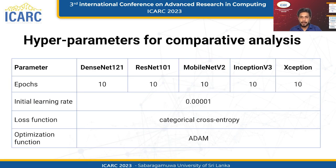In our study, we used several hyperparameters to perform a comparative analysis of different convolutional neural network architectures for visual feature extraction. For each of the CNN architectures we tested, we used a fixed number of epochs set to 10. We also used an initial learning rate of 1×10⁻⁵ for all models. We used categorical cross-entropy as the loss function, which is commonly used for multi-class classification tasks. We used the Adam optimization function, which is a popular choice for deep learning tasks due to its ability to adapt to changing gradients during training. By using these hyperparameters consistently across all models, we were able to perform a fair and comprehensive comparative analysis.